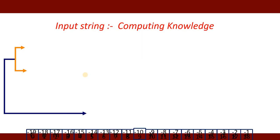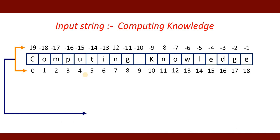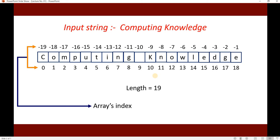For example, if you input the string 'computing knowledge', its length will be 19. The array index starts from 0 onward, and you can also represent in terms of negative index where the last character starts from minus 1, minus 2, and so on. The first character gets the last negative index, which in this case would be minus 19.